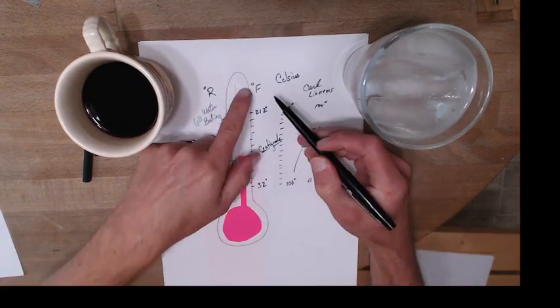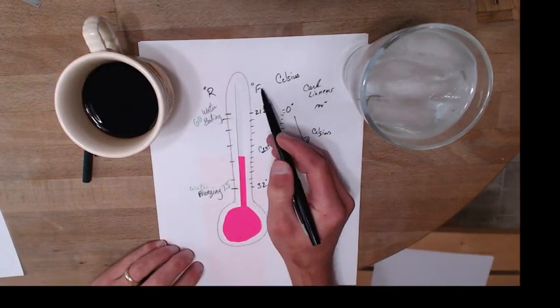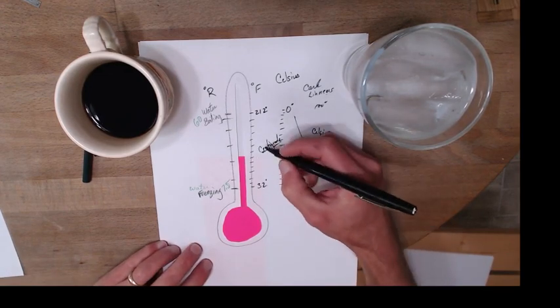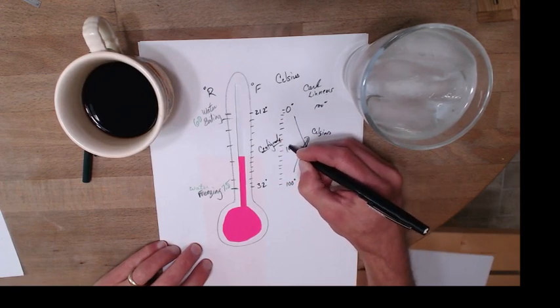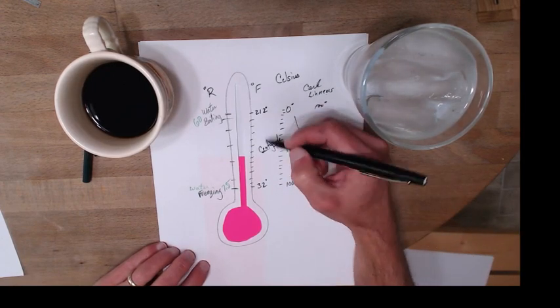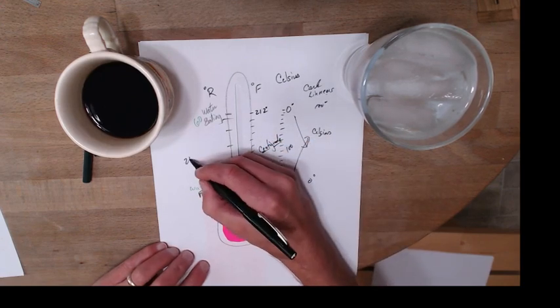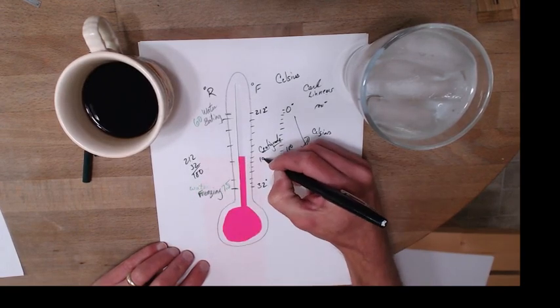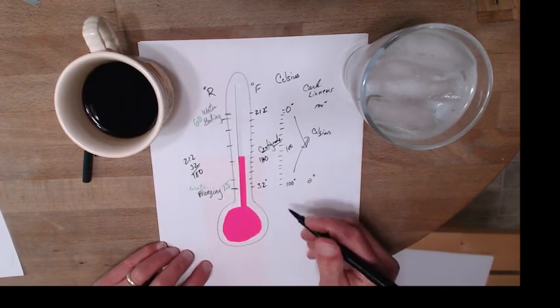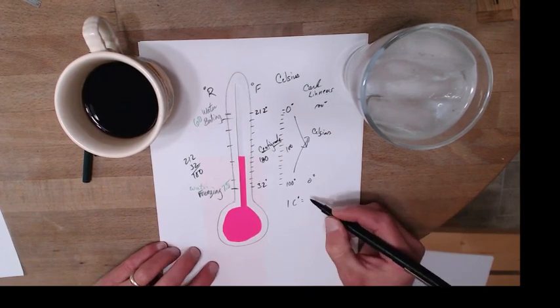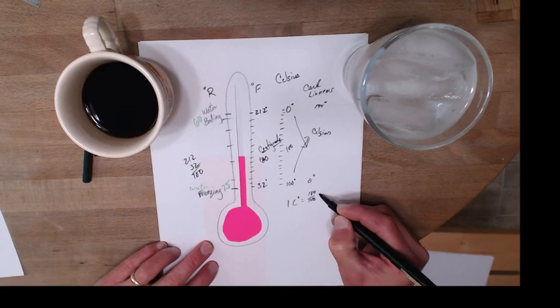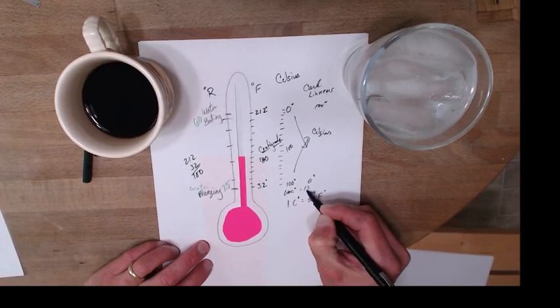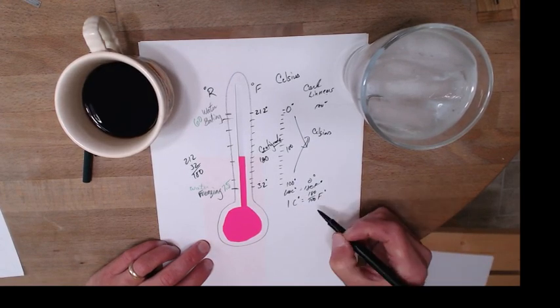So in the United States we're stuck with this Fahrenheit system. So how do I move from Fahrenheit to Celsius? You can see that there are 100 steps in the Celsius system. There are—I should have done this before—that's zero, that's 80, so there's 180 steps from there to there. So one Celsius degree is 180 one-hundredths Fahrenheit degree, right? Because 100 Celsius is 180 Fahrenheit. So this then turns into nine-fifths.